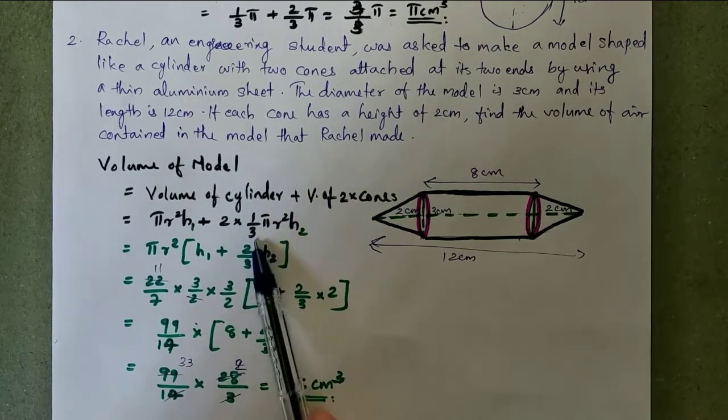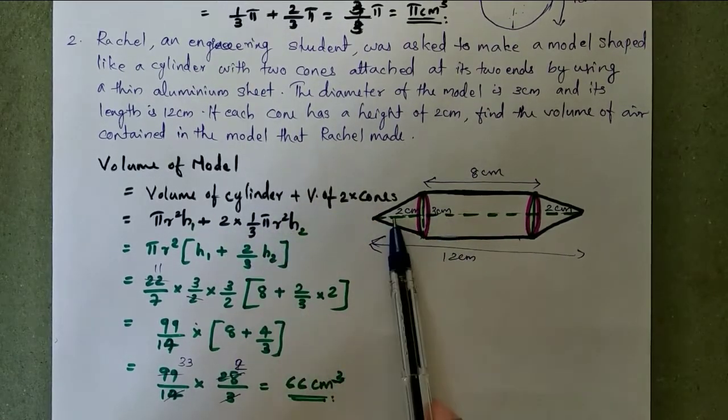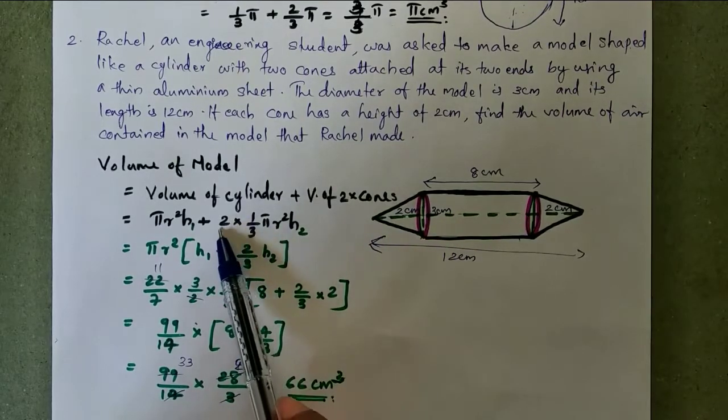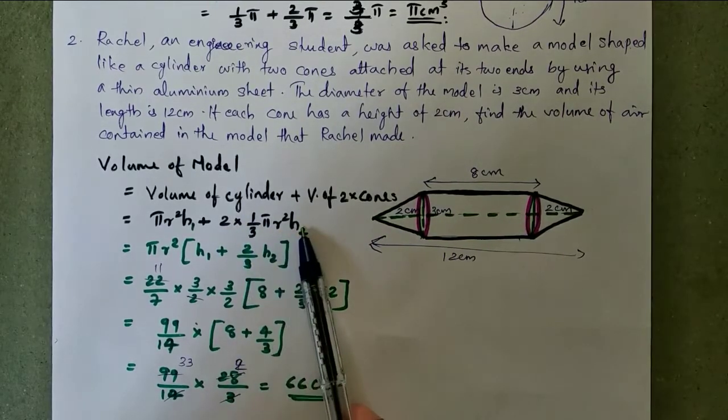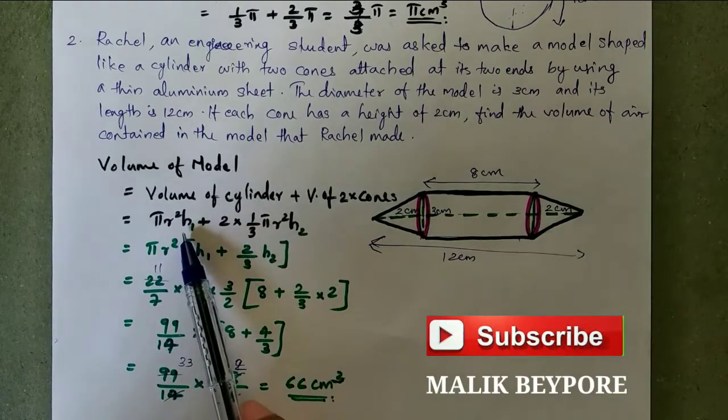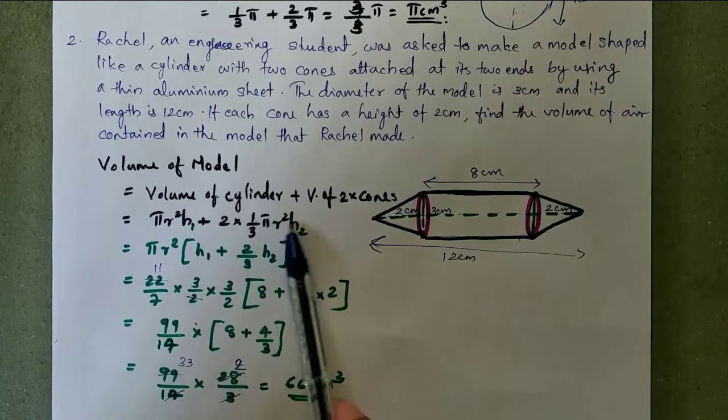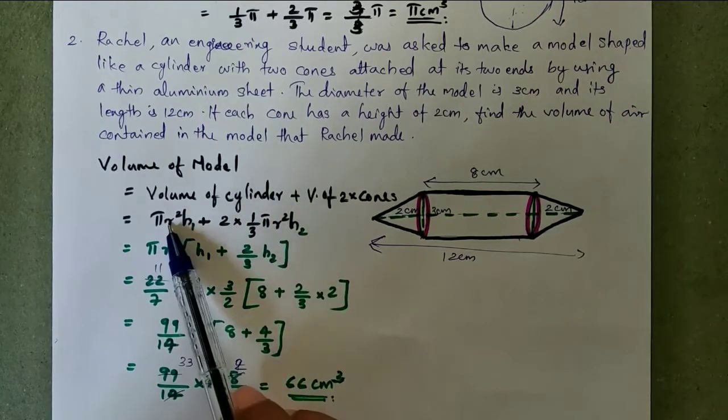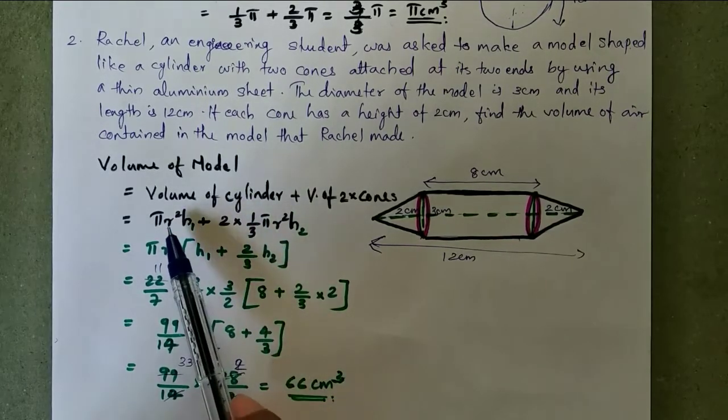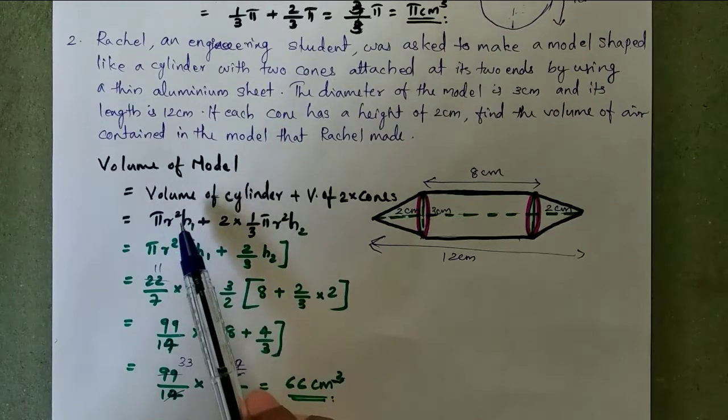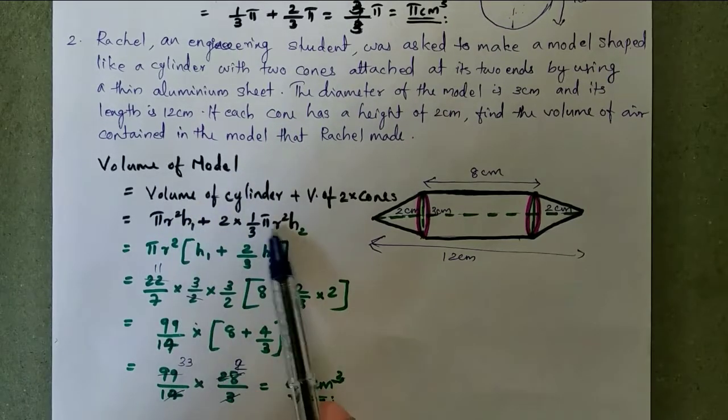Volume of two cones is equal to volume of cylinder π r² h plus volume of cone is 2 by, uh, 1/3 π r² h, so how many here? Two. So 2 into 1/3 π r² h. We take here h₁ and here h₂ because these two heights are different but the radius are same.